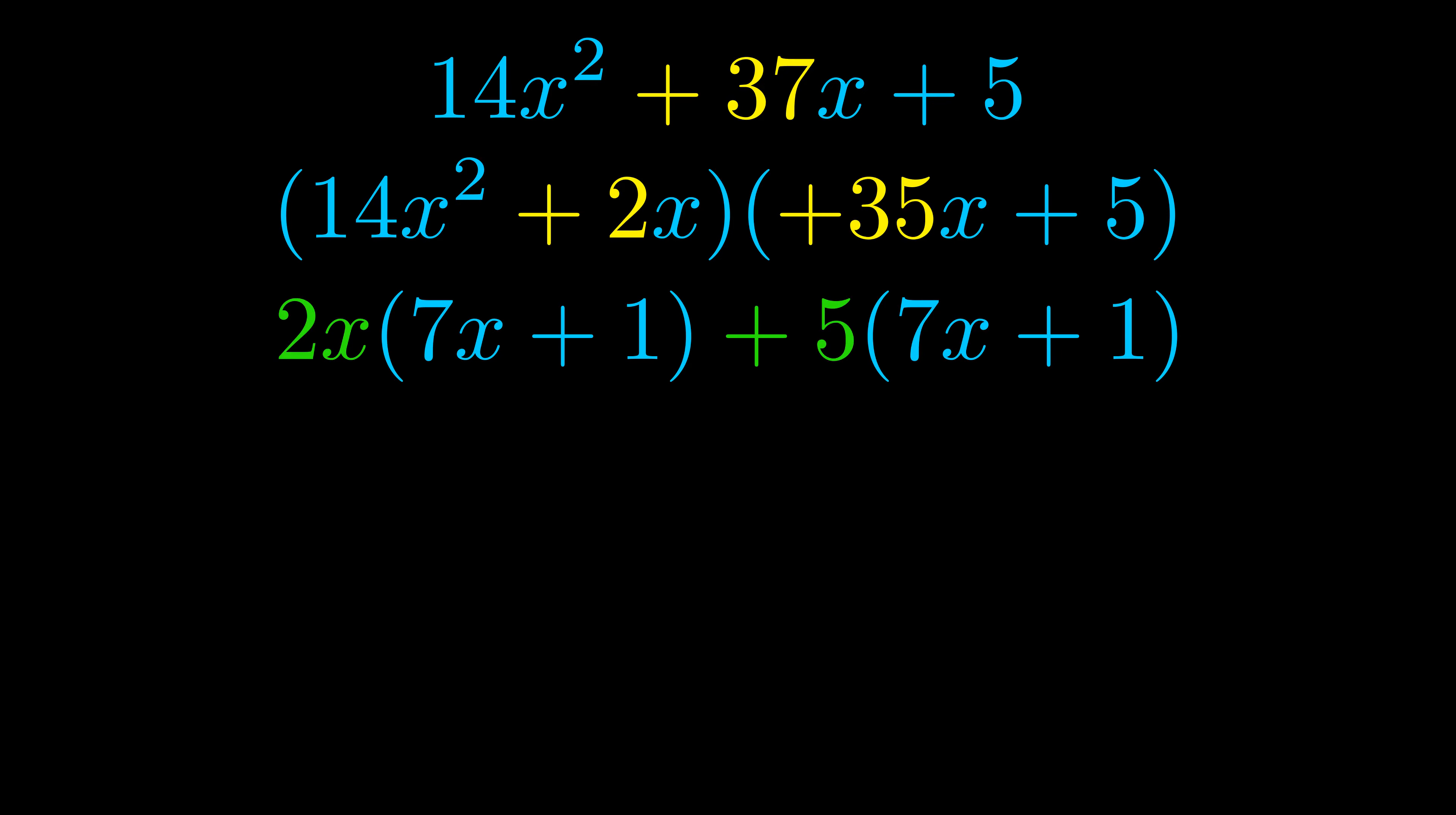Notice also how what remains inside of the parentheses is the same in both cases. The blue values are the same. Those blue values will become one of our factors and we will combine the two green values, the GCFs that we pulled out, to get the other one. And that is our fully factored equation.